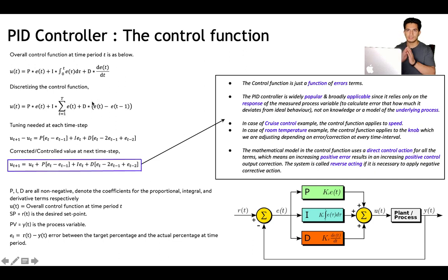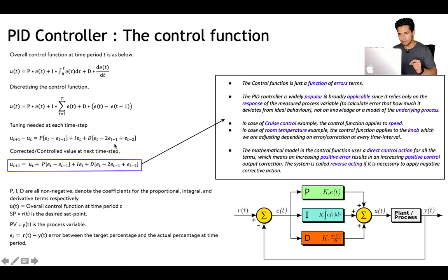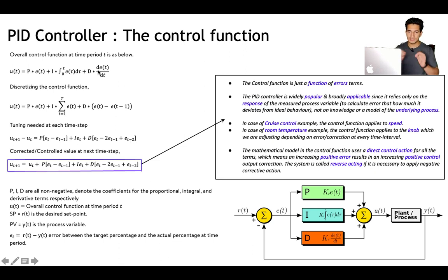The tuning update at each timestep is: u(t+1) minus u(t) equals P times (e(t) minus e(t-1)), plus I times e(t), plus D times (e(t) minus 2*e(t-1) plus e(t-2)). Here P, I, and D are just the coefficients of the proportional, integral, and derivative terms respectively.